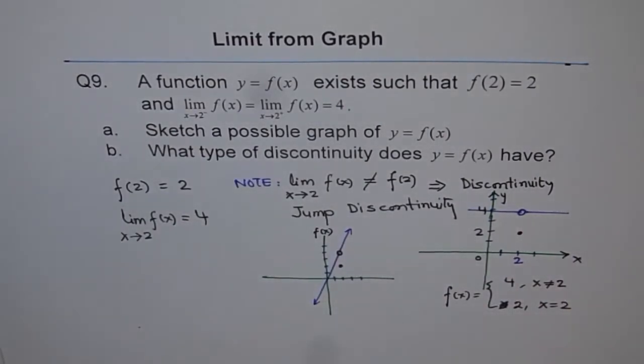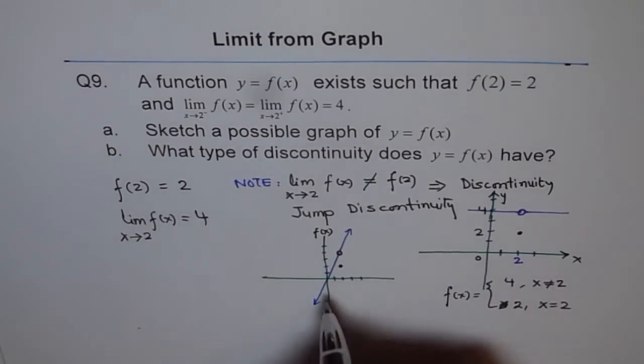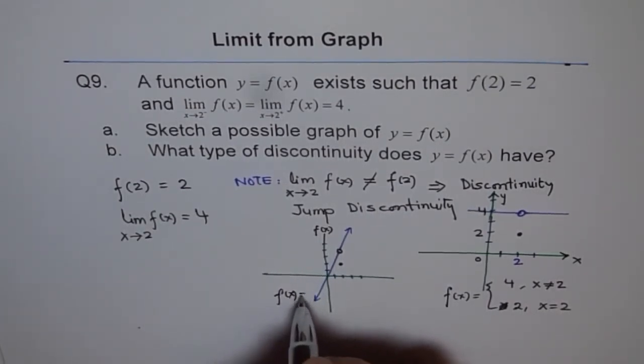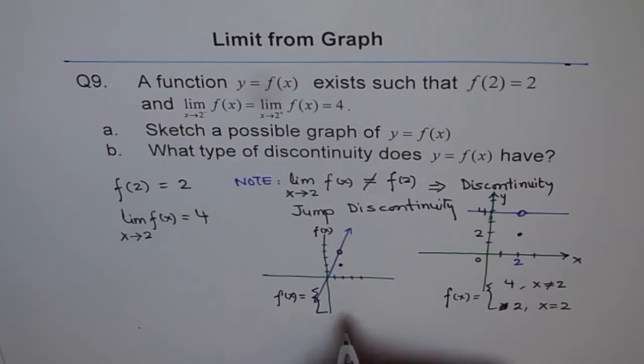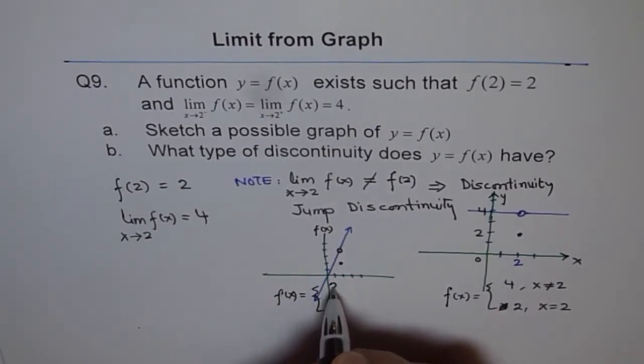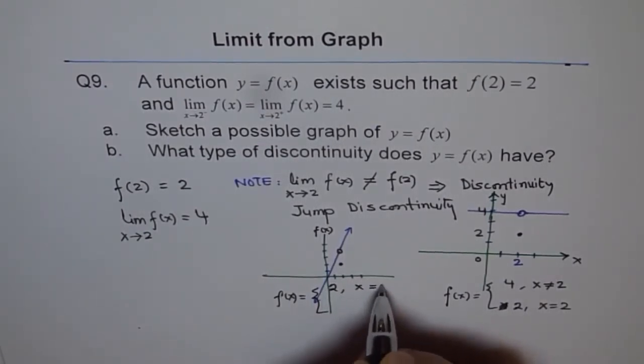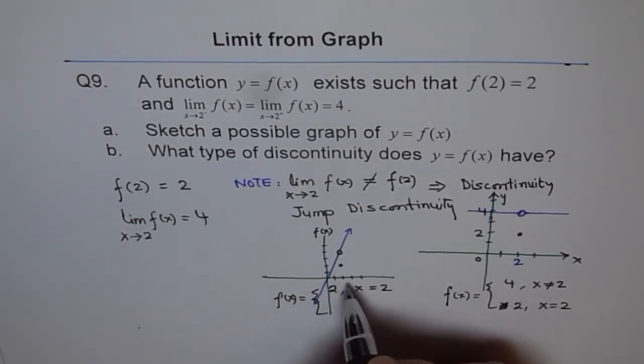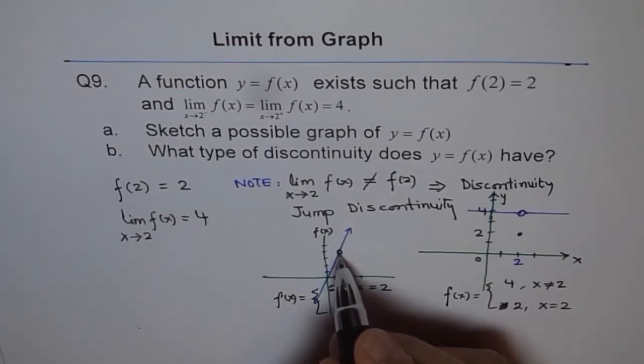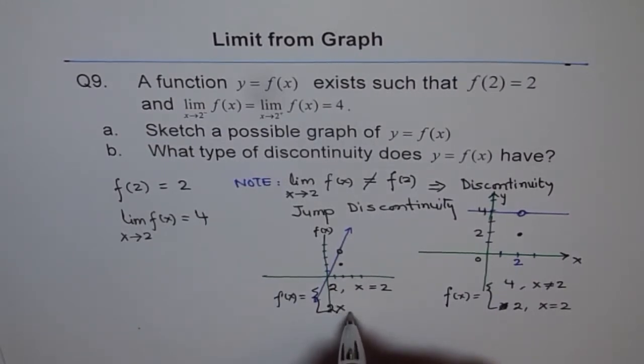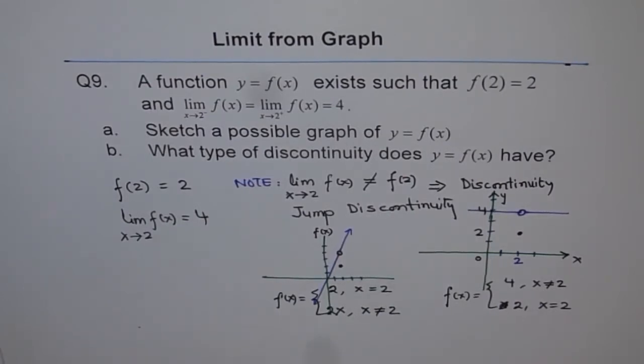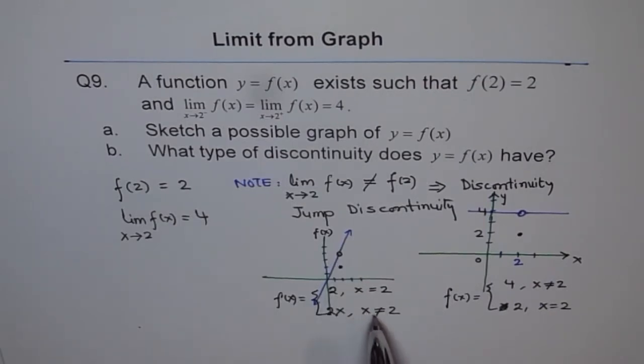So, and we can write or describe our function, we can describe it like this, that f of x is equals to a piecewise function where it is equals to 2 for x equals to 2. And let us say at 2, we want it to approach 4. So we say it is equals to 2x when x is not equal to 2. So any other value when x is not equal to 2, it is 2x. So we have a hole here because this is not defined at 2. But at 2, we have a fixed value which is a hole. Do you see that?